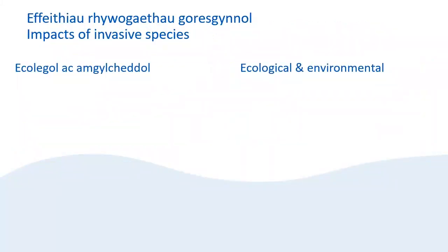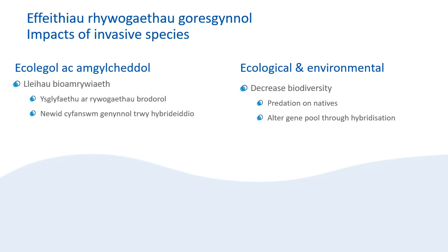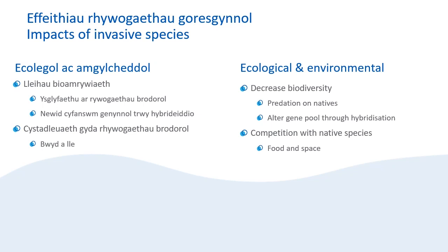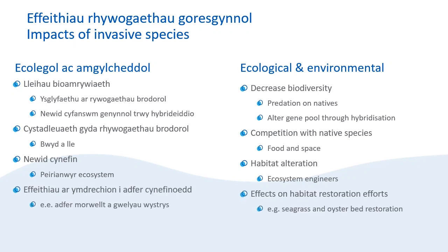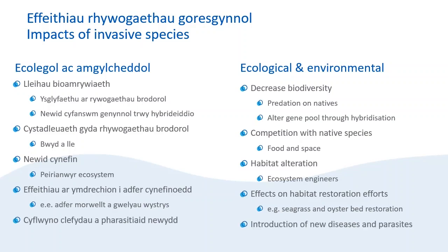INNS are counted in the top five leading causes of biodiversity loss globally. This is because they can prey on native species and can alter gene pools through hybridisation. INNS can out-compete native species for resources like food and space. Some INNS can alter habitats, changing the structure of the substrate and ecosystem. They can hamper habitat restoration efforts, for example in seagrass or oyster beds. And lastly, they can introduce diseases and parasites that might decimate native populations.